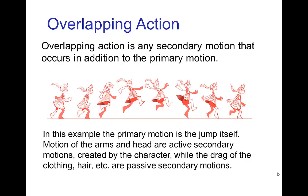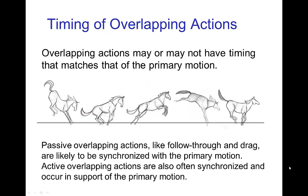then the primary motion would be the jump itself and then the motion of the arms and maybe the head would be what I'd call active secondary motion, which is animated by the character, while there are also passive secondary motions such as the drag of the clothing, the hair, and so forth.